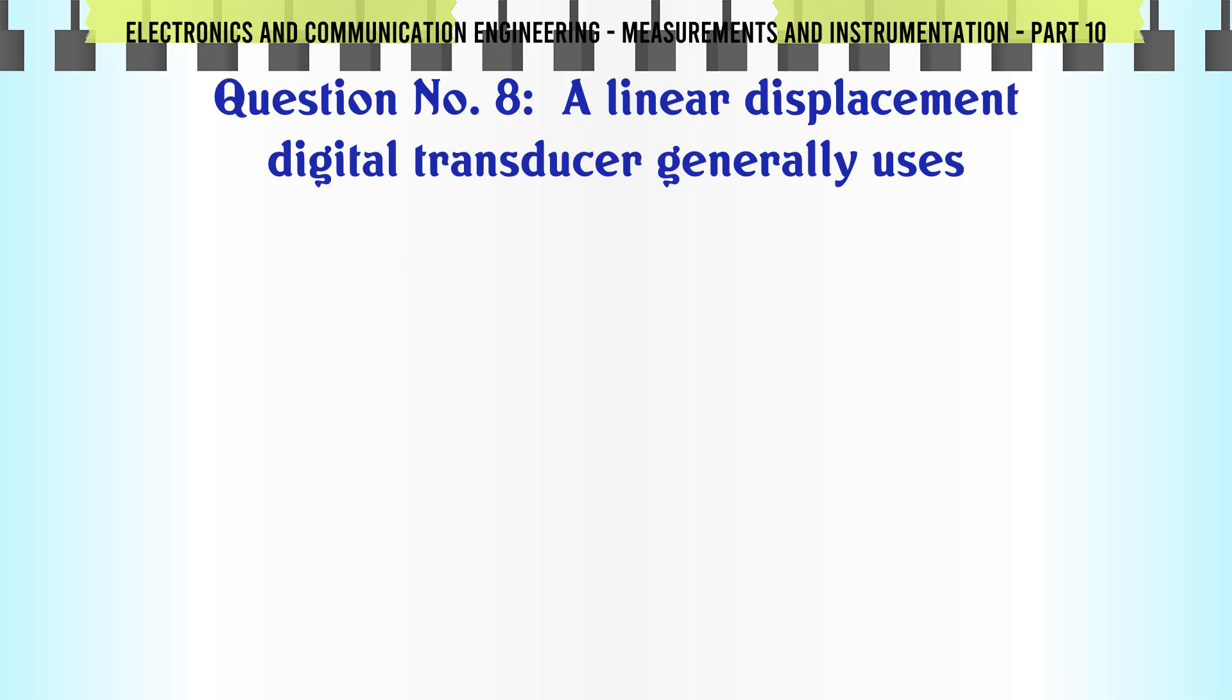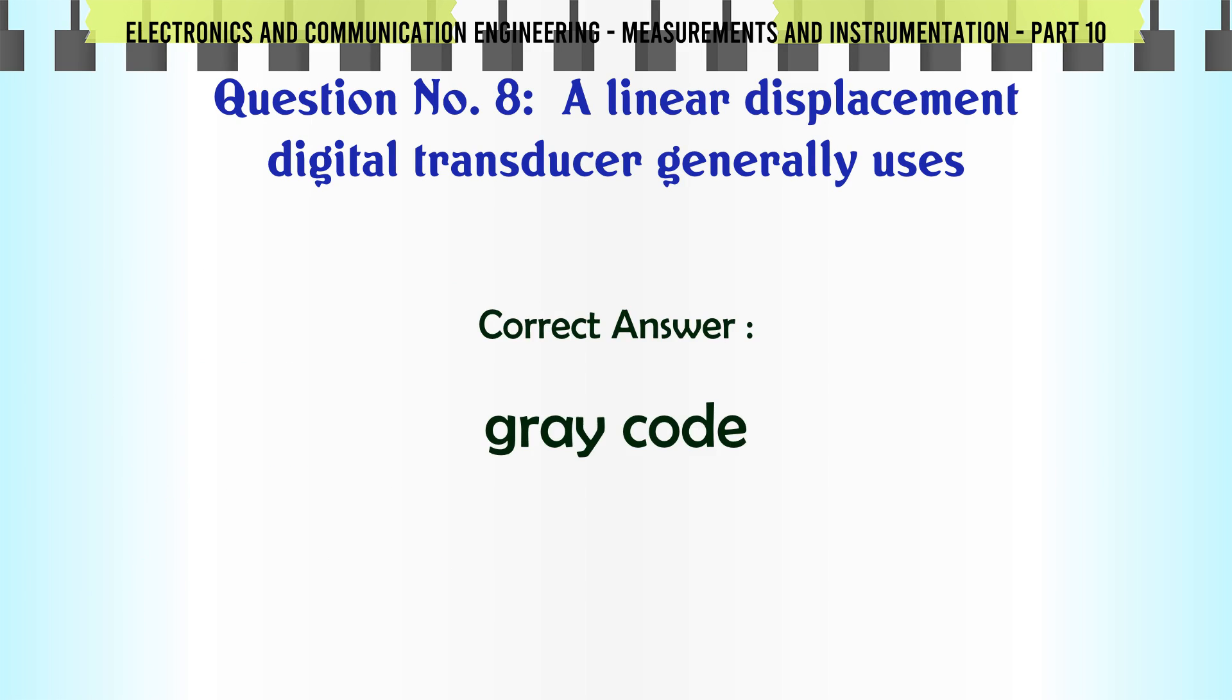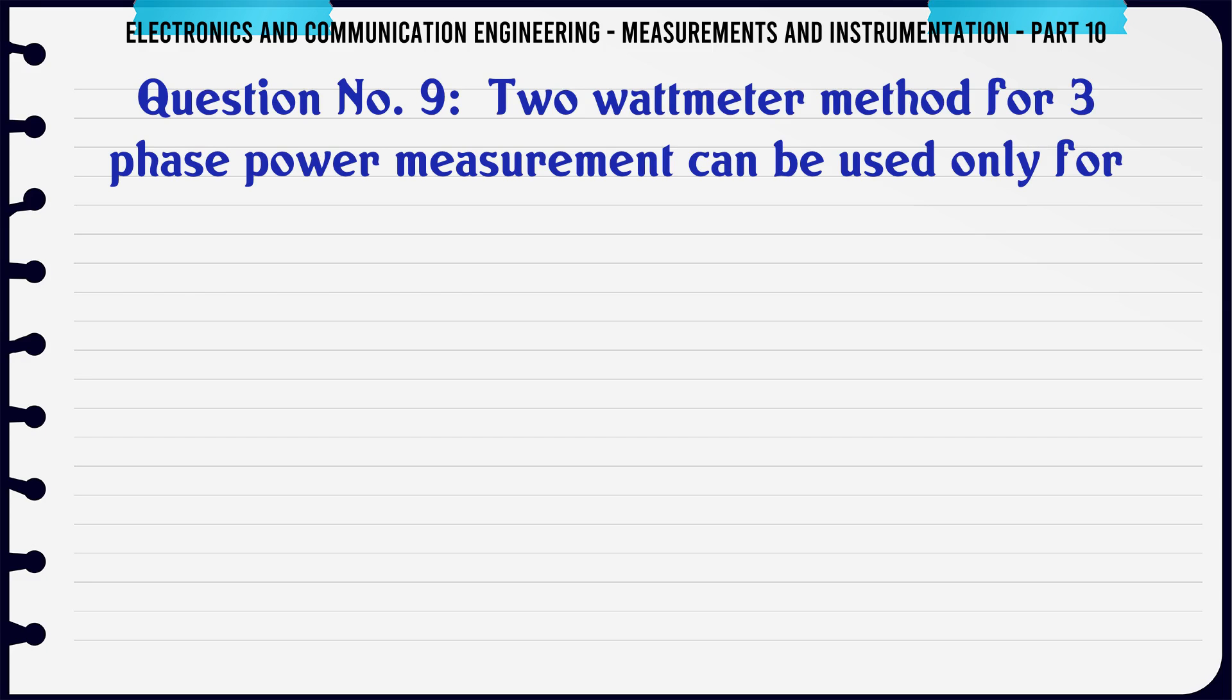A linear displacement digital transducer generally uses: A) straight binary code, B) BCD, C) gray code, D) hexadecimal code. The correct answer is gray code.